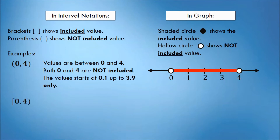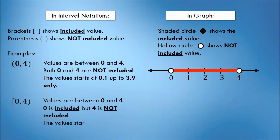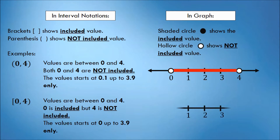Another example: we have the interval [0, 4). This interval indicates that the values included are between 0 and 4. 0 is included because of the bracket symbol, but 4 is not included because of the parenthesis symbol. Meaning, the value starts at 0 up to 3.9 only. In the graph, we will put a shaded circle on 0 because 0 is included, and a hollow circle on 4 because 4 is not included. The solution set is from 0 up to 3.9 only.